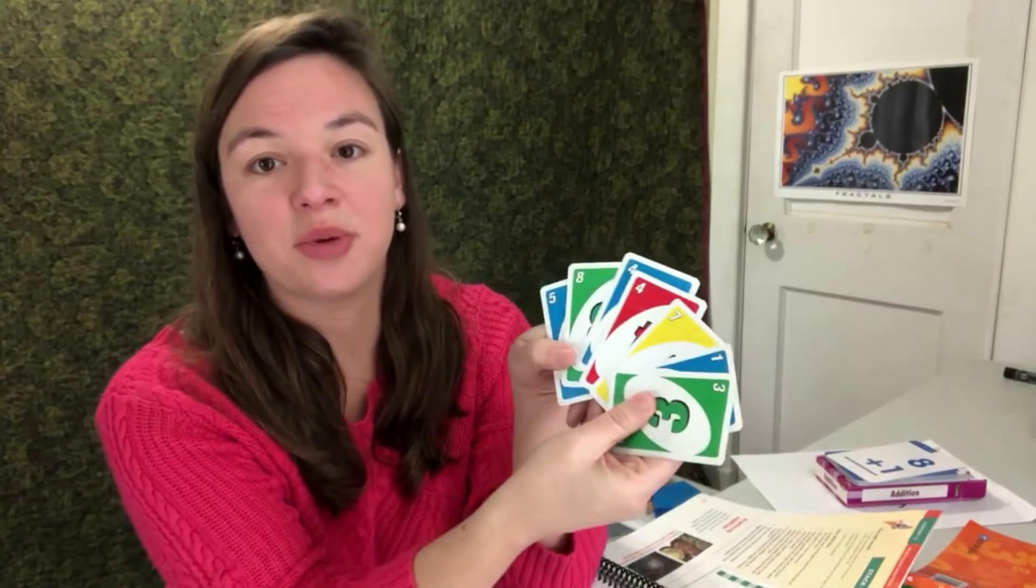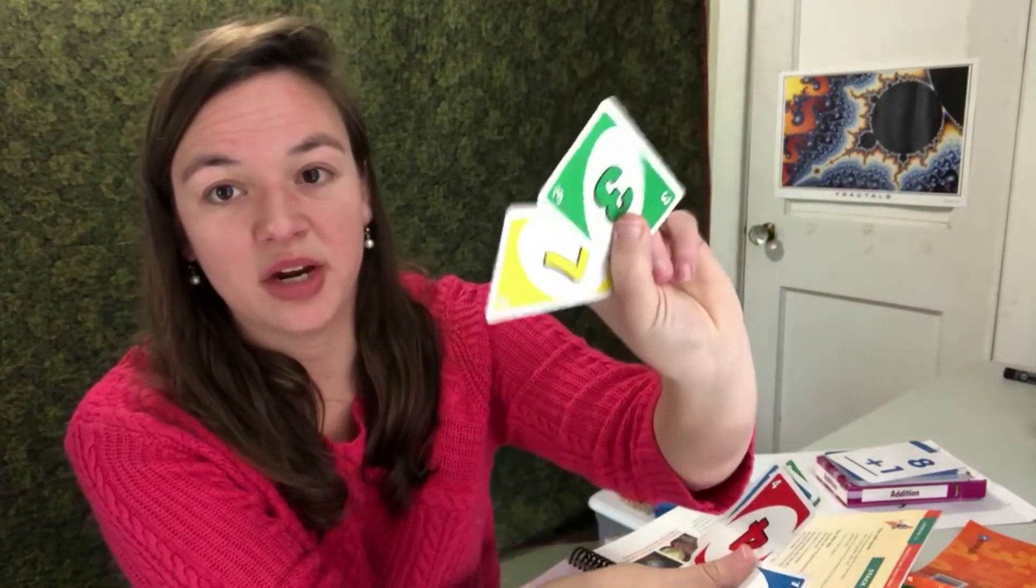Fishing for Tens follows the rules of go fish. So, you deal seven cards to each player, and in your hand, to make a match, you're not going to do like a 3 and a 3. You're going to do something that makes 10. So, I have a 7 and a 3. So, I have a pair, and I would lay that down. And then, I'm seeing here, I have a 4. So, I would be asking like, does anyone have any 6s?